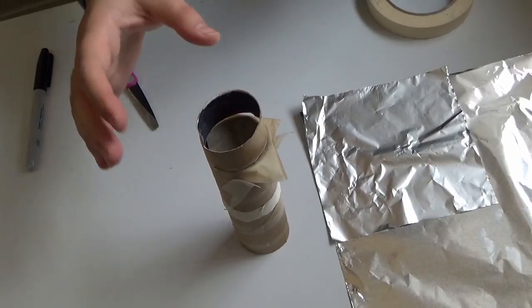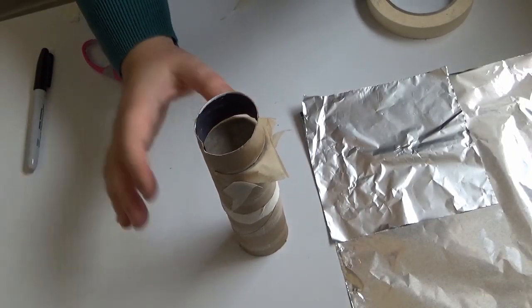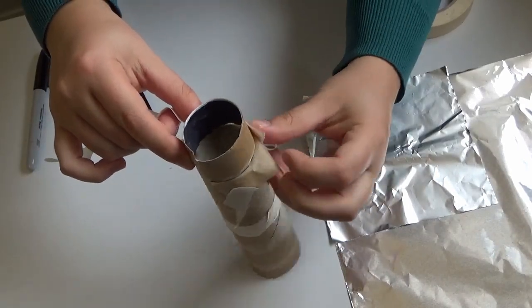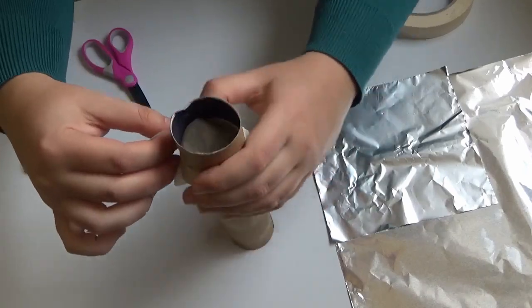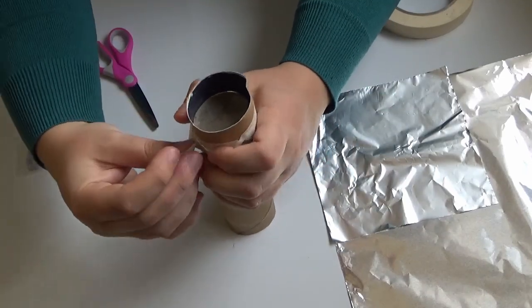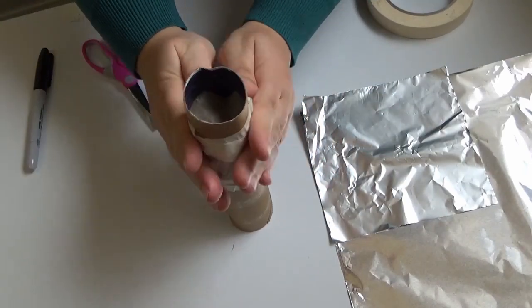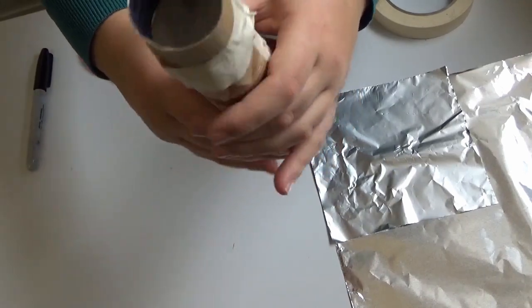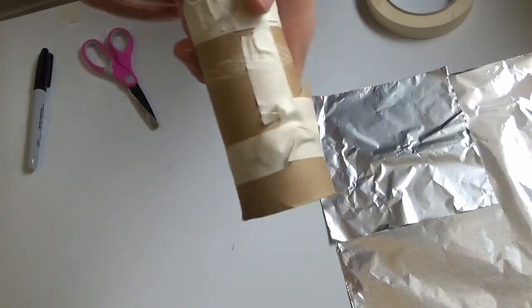I'm now going to use more tape to attach the top and bottom parts of the tube back together with our lens in the middle. When you're done, you should have a tube with a little bit of wax paper in it held in place by sticky tape.